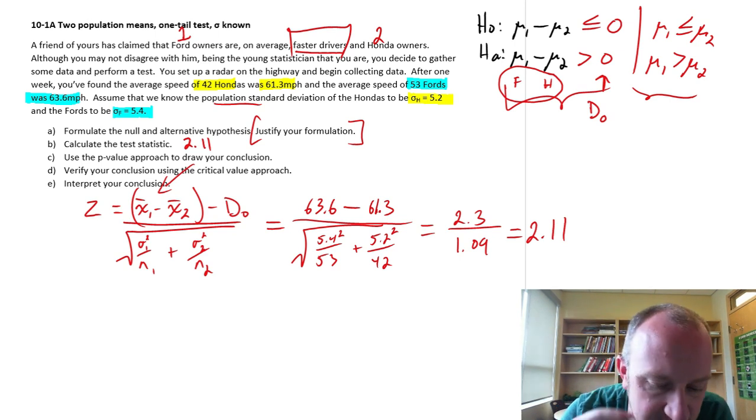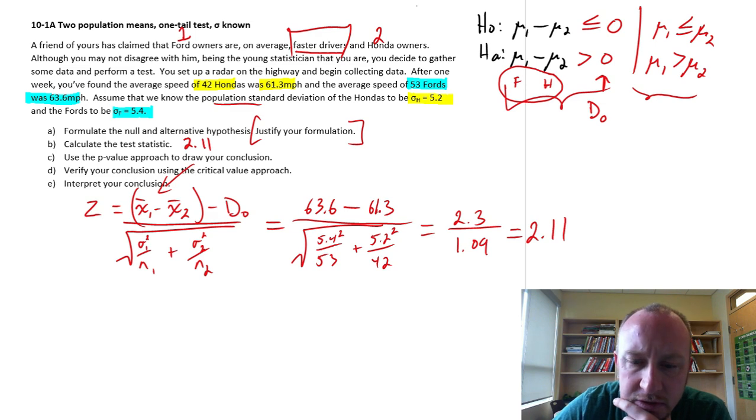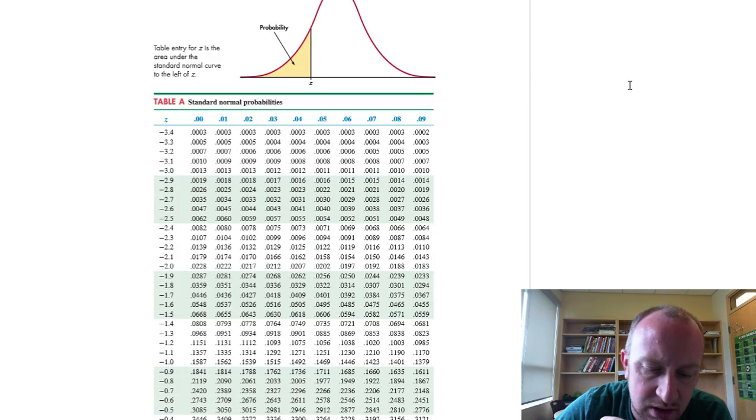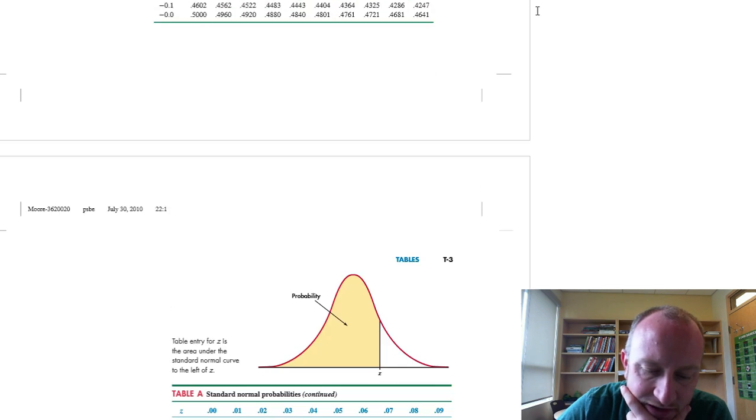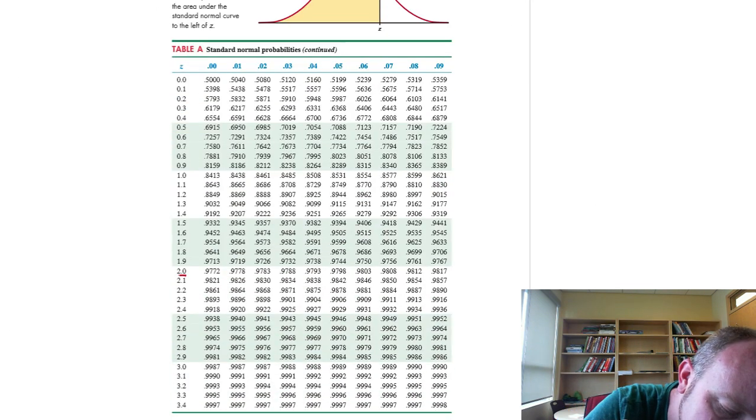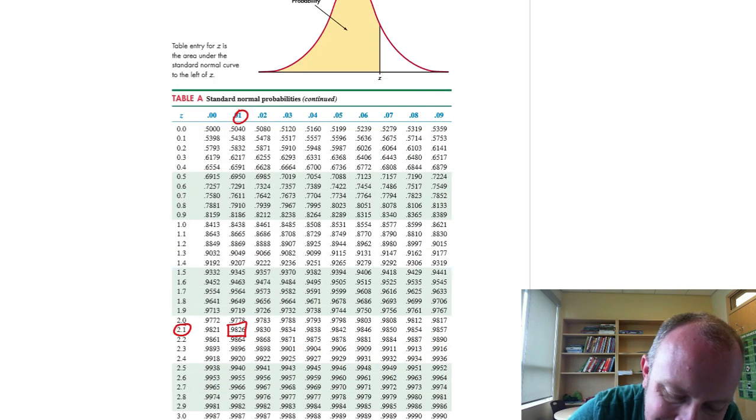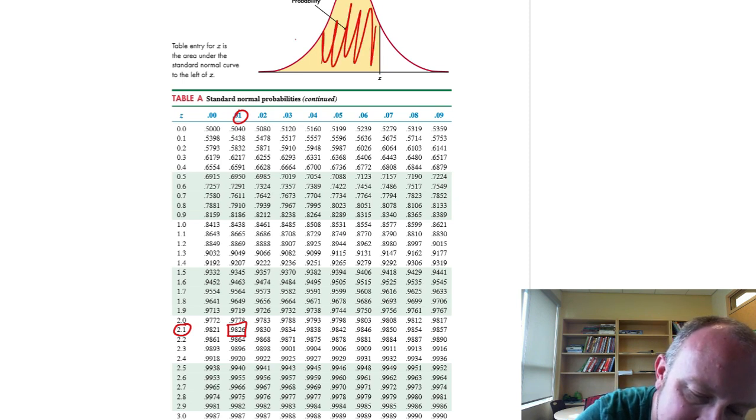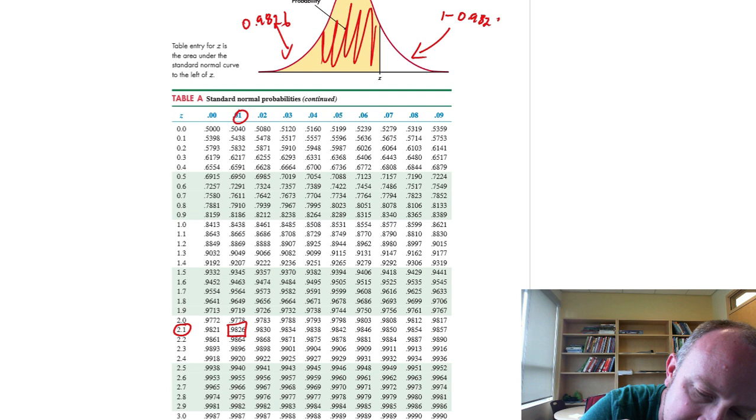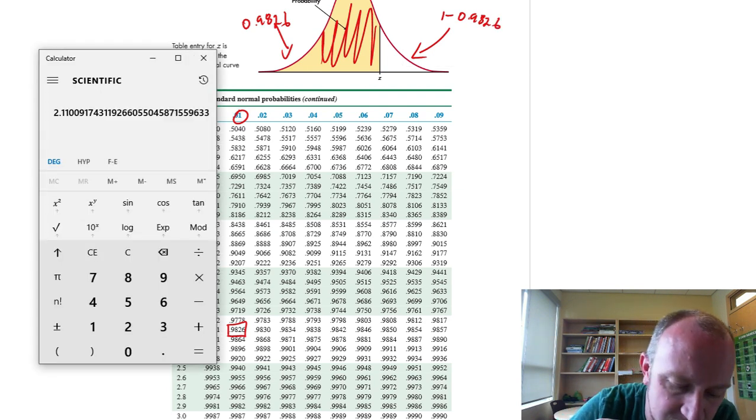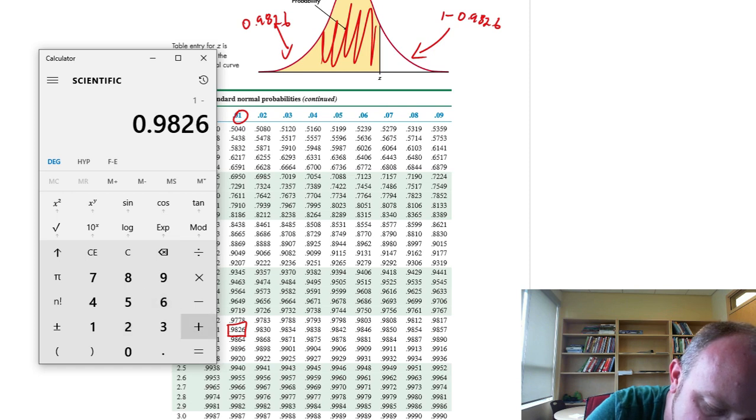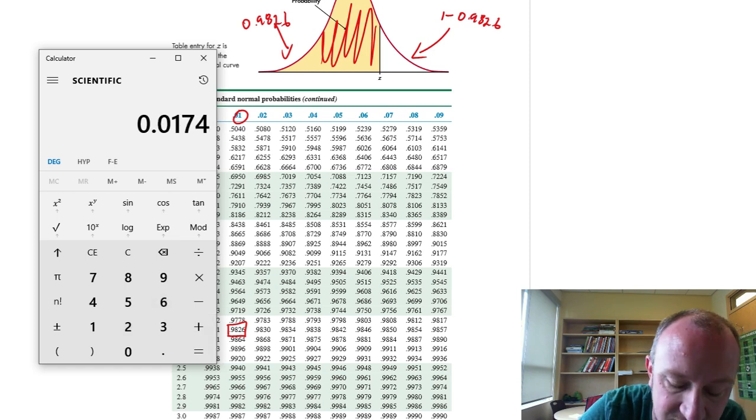Now we'll use the p-value approach to draw our conclusion. Okay, so let's go to our Z tables. And we have a test statistic of 2.11. So again, we can go to the positive. There's my 2.11. That gives me a value of 0.9826. That would be in the lower tail. But we're doing an upper tail test, so what we want is 1 minus 0.9826. And if I go to the calculator, 1 minus 0.9826, that gives me a value, a p-value of 0.0174.